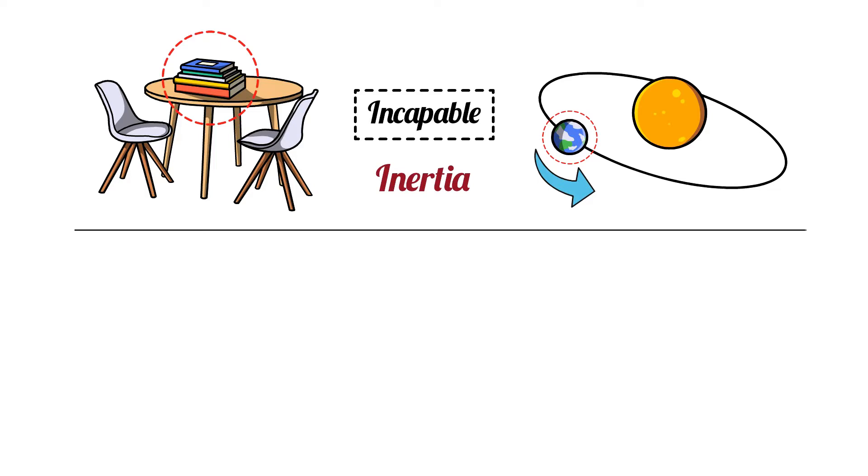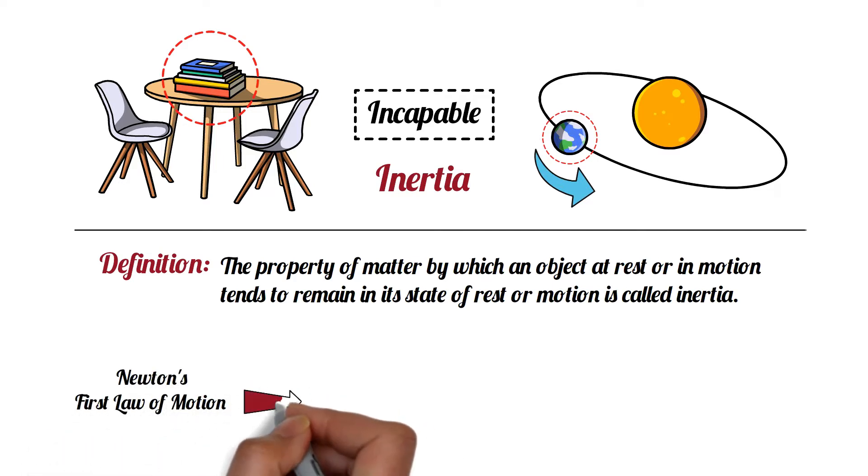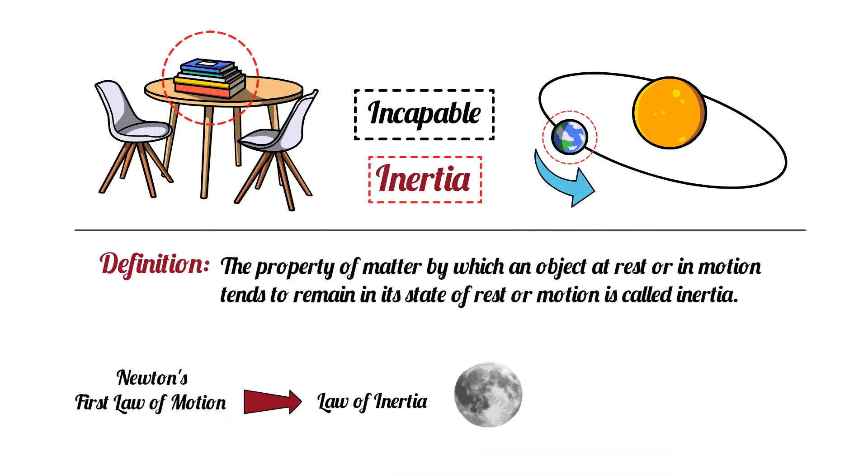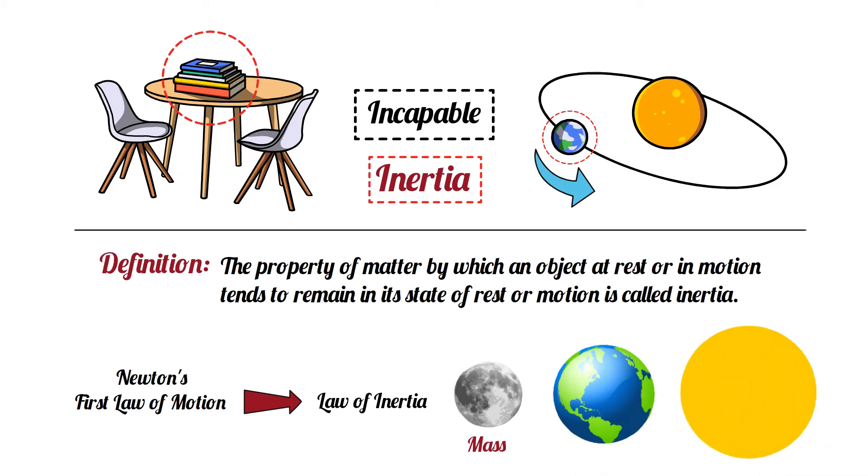In another way, we can say that the property of matter by which an object at rest or in motion tends to remain in its state of rest or motion is called inertia. This is why Newton's first law of motion is also called the law of inertia. The inertia of an object is related to the mass of the object. The greater the mass, the greater its inertia.